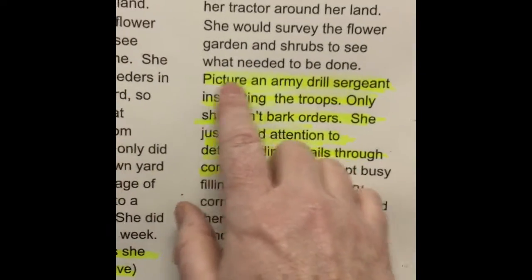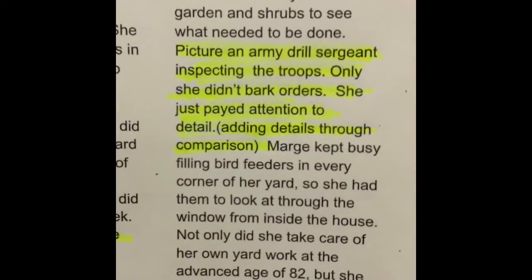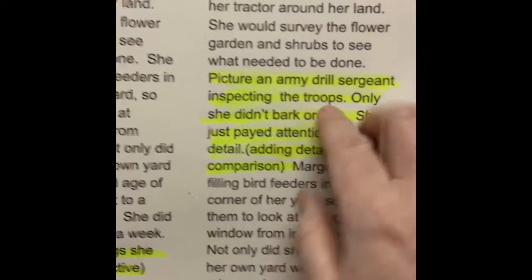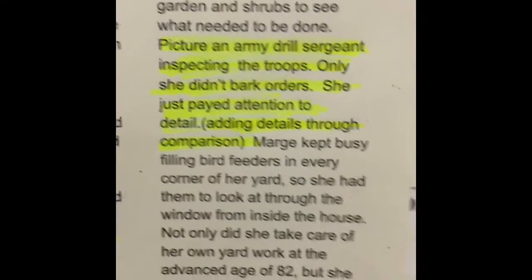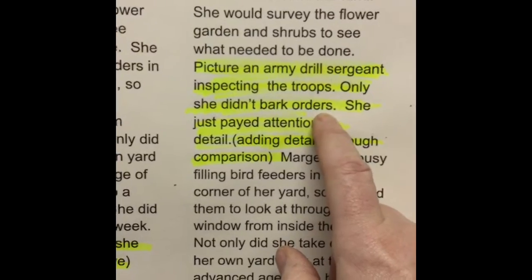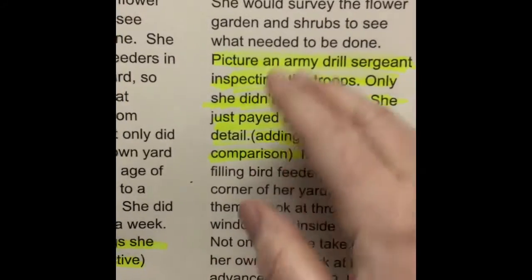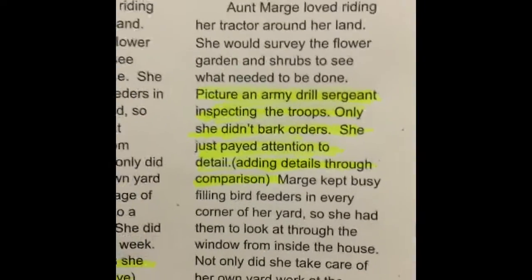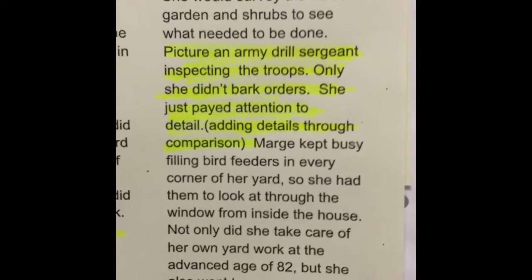I said picture an army drill sergeant inspecting the troops. So I'm comparing Aunt Marge looking at her flower garden to a drill sergeant inspecting the troops — only she didn't bark orders. I added more detail about what an army drill sergeant would do: they bark orders at the troops. So if she didn't do that, what did she do? She just paid attention to detail. I was able to develop and add three sentences to this part of the body paragraph, and it adds a little bit of voice and personality to my nonfiction writing so it's not dry.